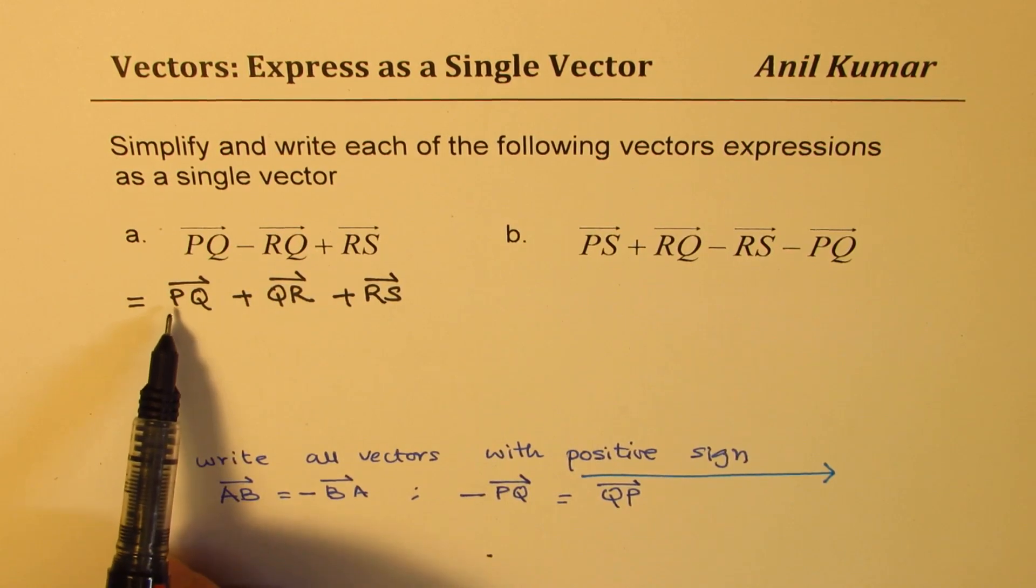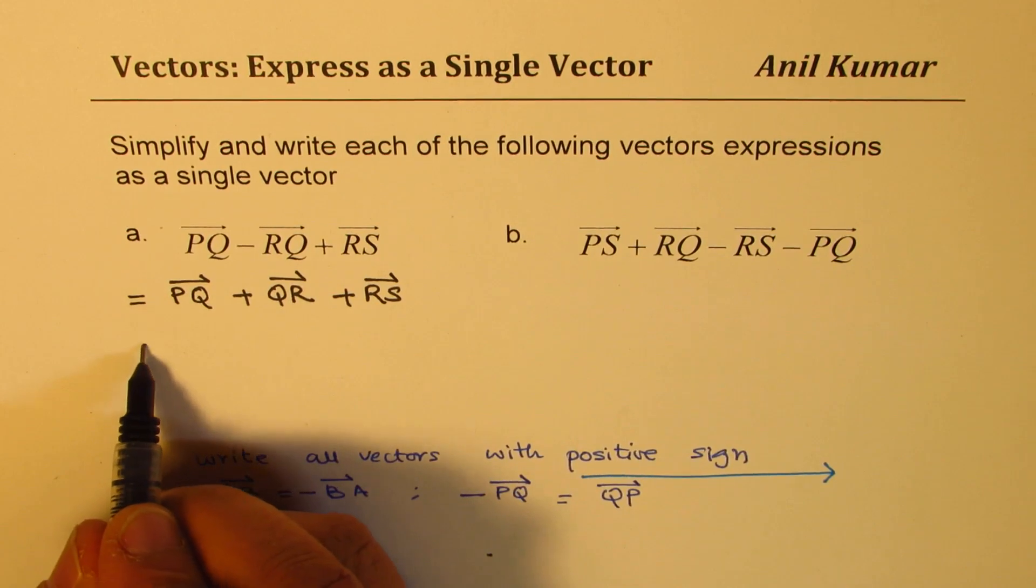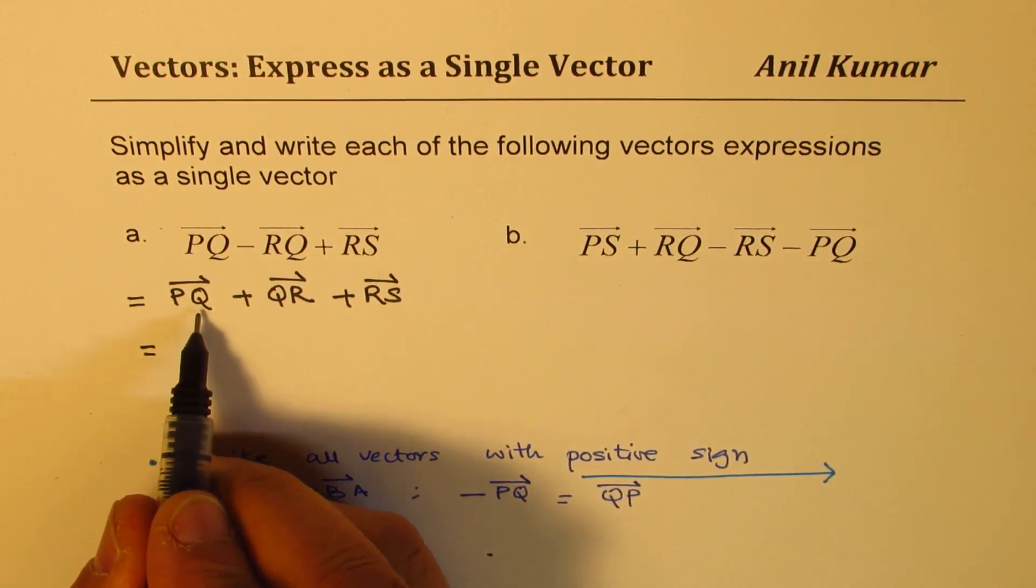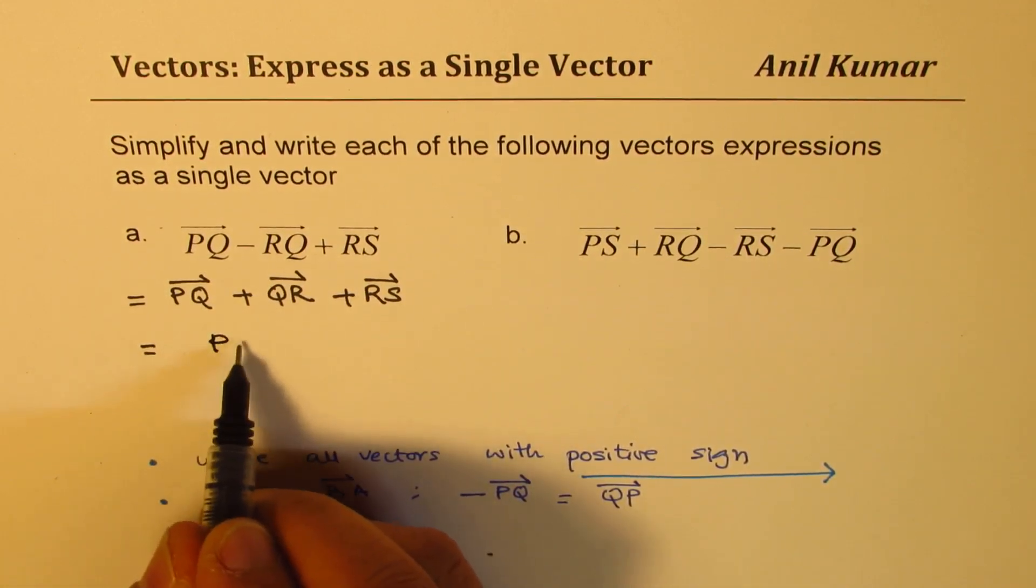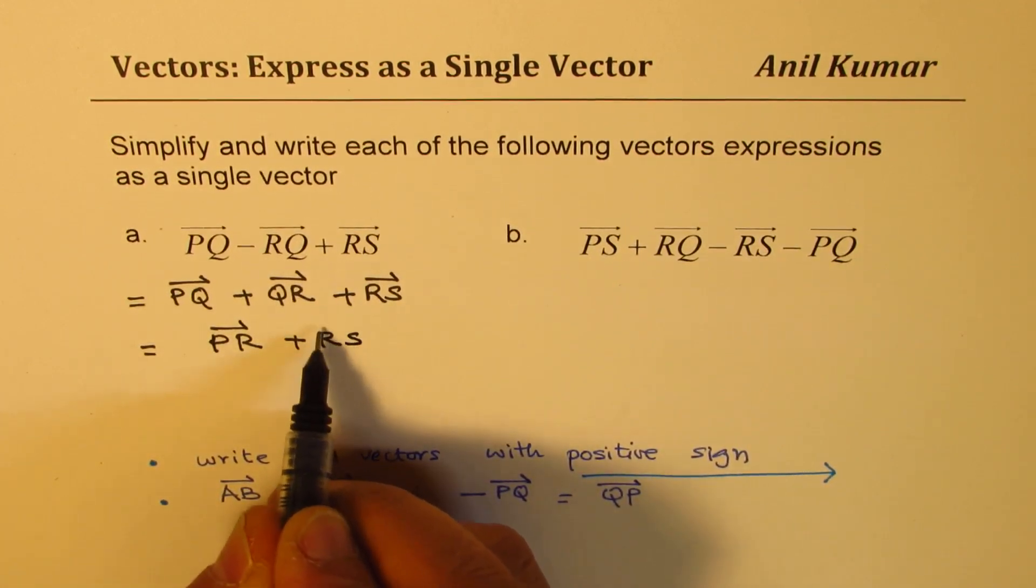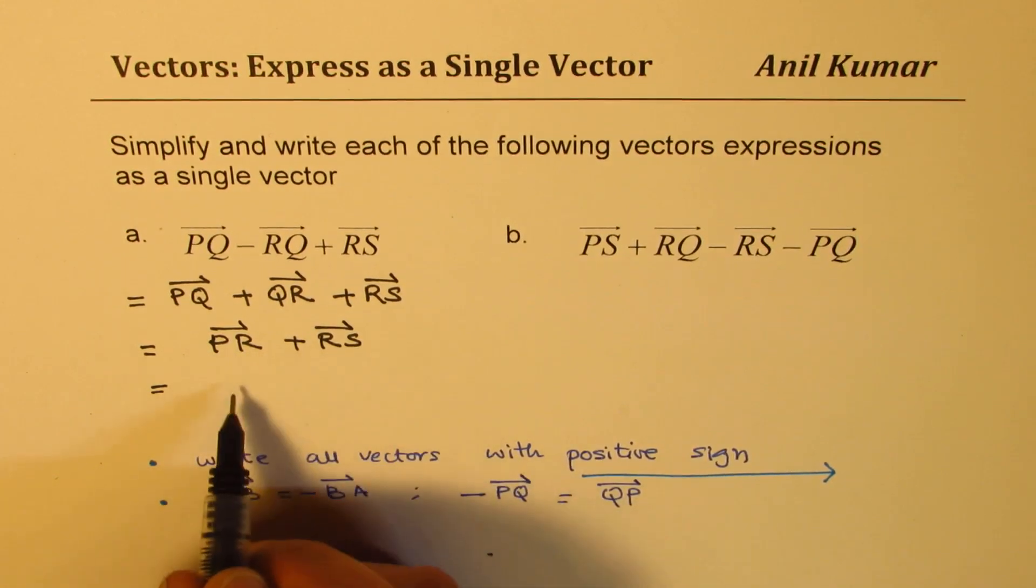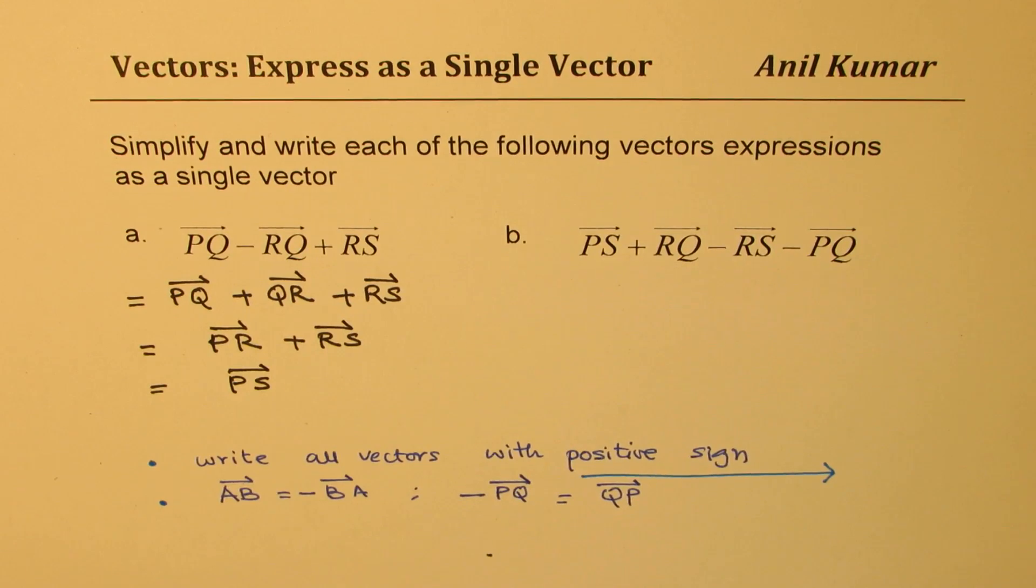Then we have RS right there. Now, we are going from P to Q and then from Q to R. Where do you land? If you go from P to Q and then Q to R, this makes it P to R.